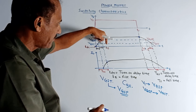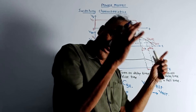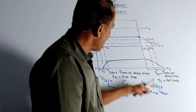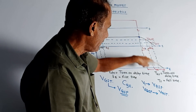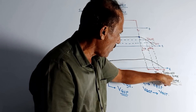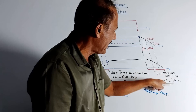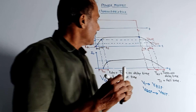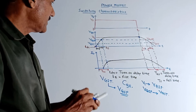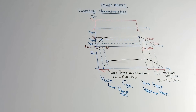So total turn-on time equals TDN plus TR, and turn-off time equals TDF plus TF. This completes the switching characteristics of power MOSFET.